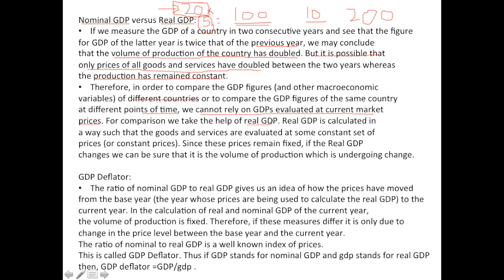For comparison, we take the help of Real GDP. Real GDP is calculated such that goods and services are evaluated at some constant set of prices. So rather than relying on the current price of 10, we rely on a certain constant set of prices. Since these prices remain fixed, if Real GDP changes we can be sure it is the volume of production that is undergoing change — in this case, the 20 units of production.